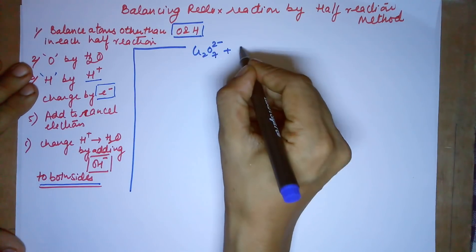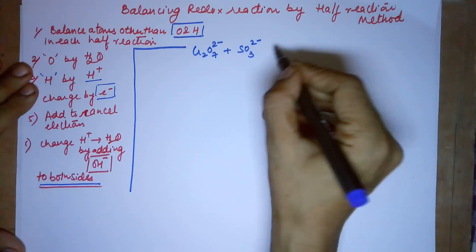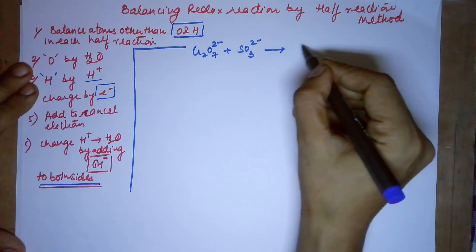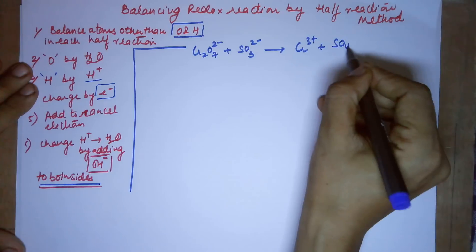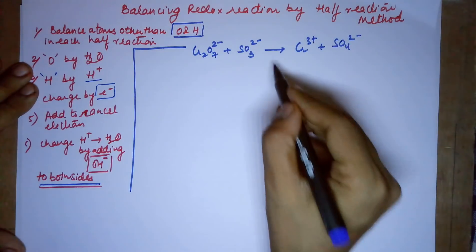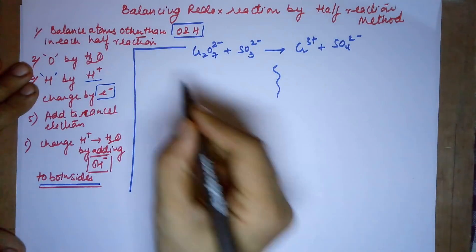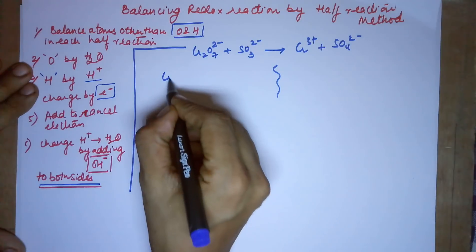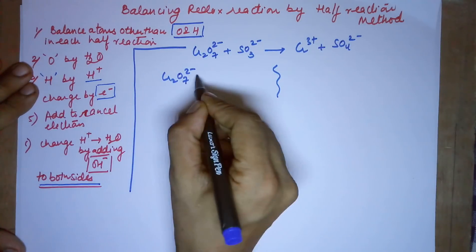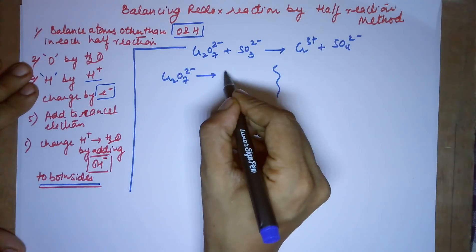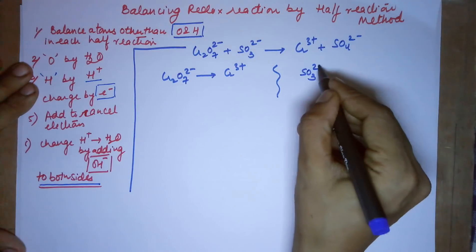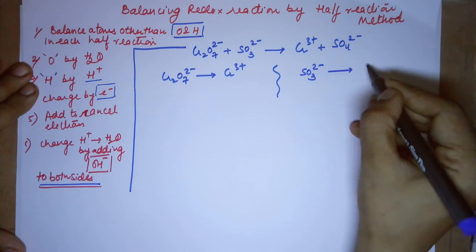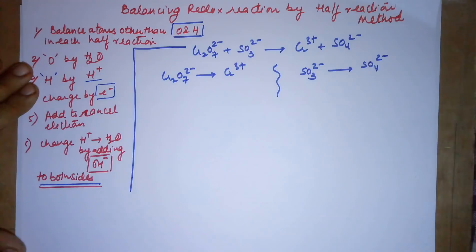The example is: dichromate ion plus sulfite ion gives chromium ion and sulfate ion. Dividing into two half reactions: dichromate ion goes to Cr³⁺, and sulfite ion goes to sulfate ion.